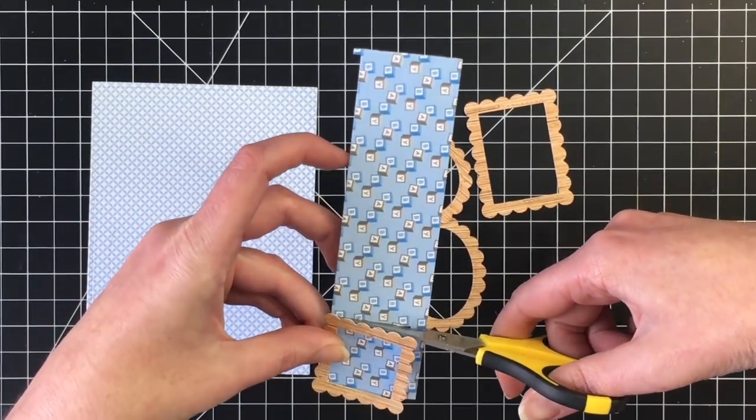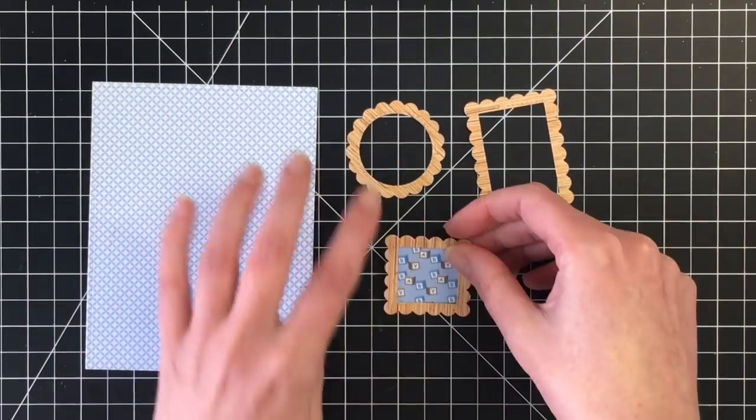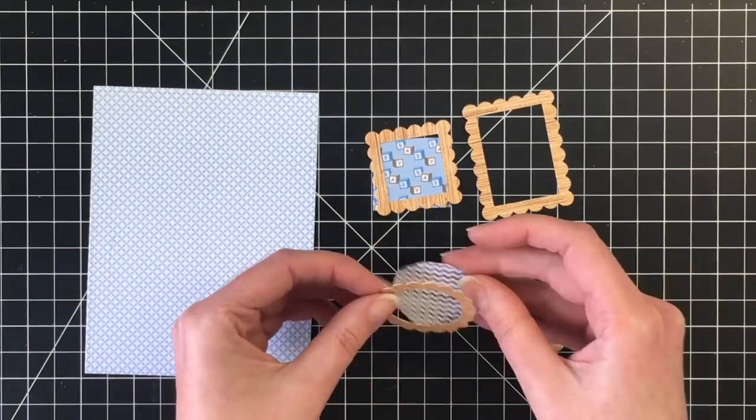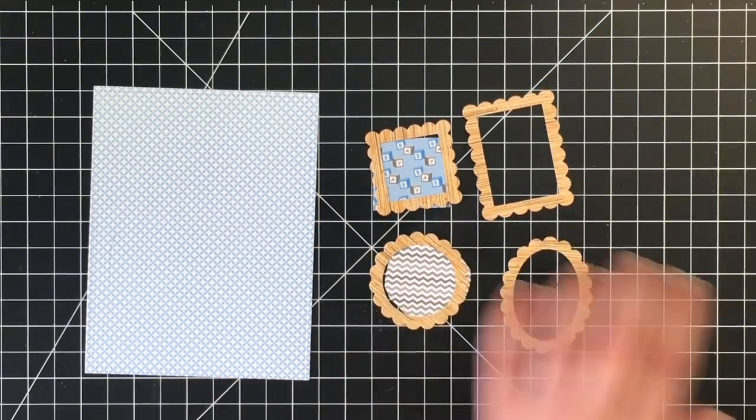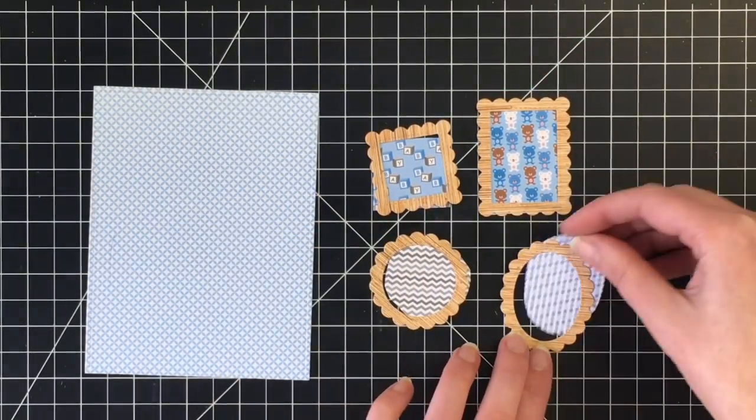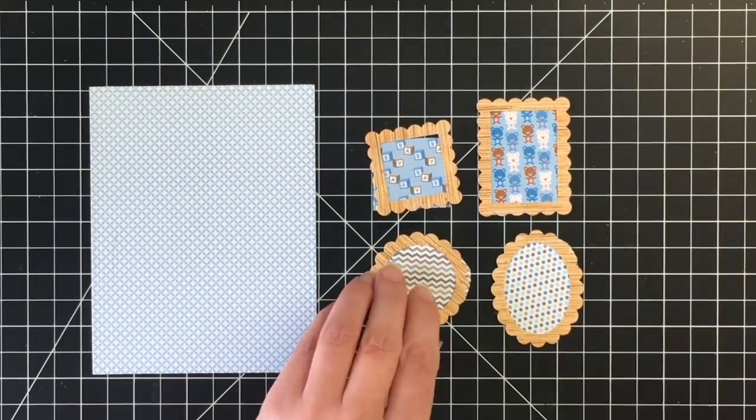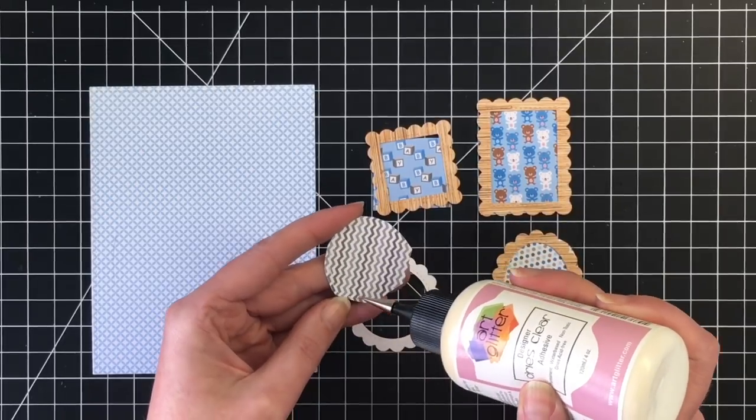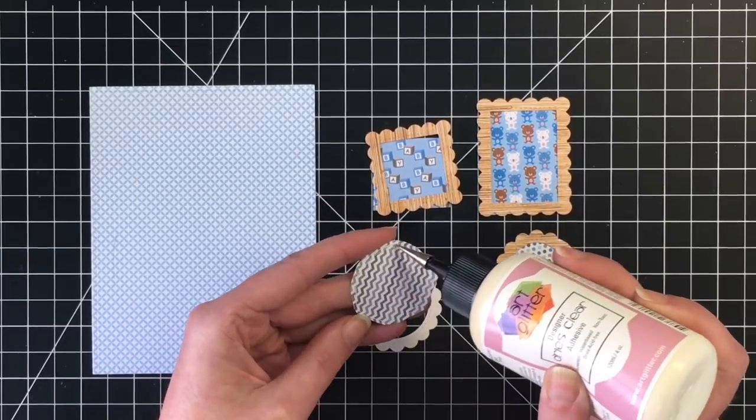I'm using various papers from the Sweet Baby paper pad for the background of my little picture frames here. And I went ahead and cut out most of them so you didn't have to watch me do that. So just chose a different piece of pattern paper for each of the frames.